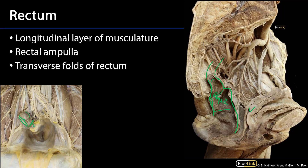Here we can see the rectoanal junction, which occurs at the level of the pelvic floor — the pelvic diaphragm. It's there that we have muscles, in particular the puborectalis muscles, that go from the pubic bones and act as a sling, meeting their counterparts around that rectoanal junction. The rectum is oriented more inferior and anterior, whereas the anal canal has a more posterior orientation.